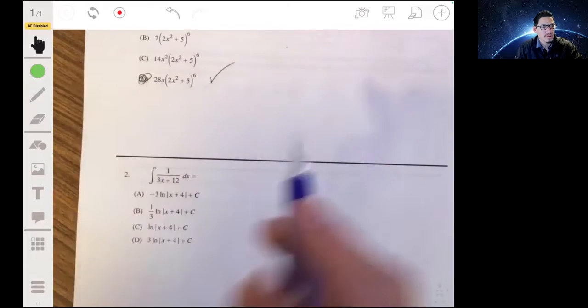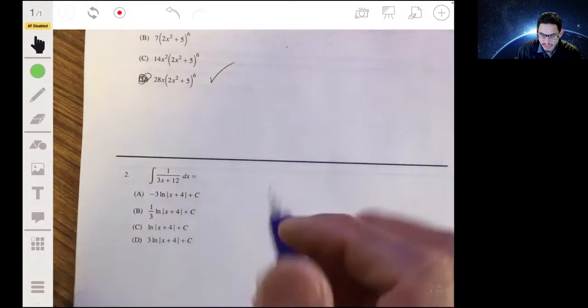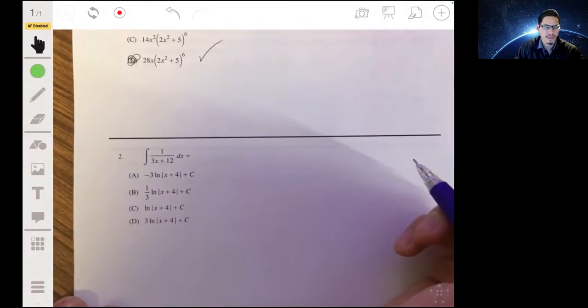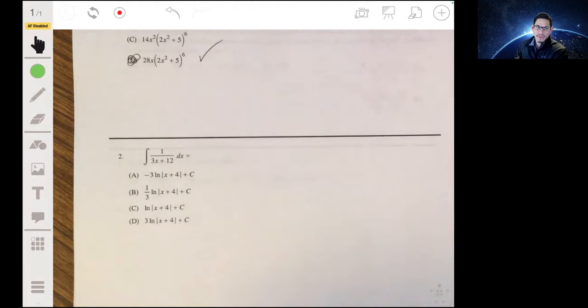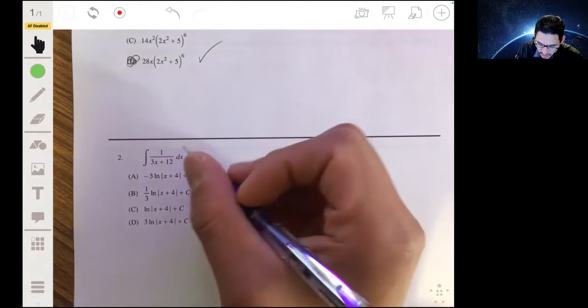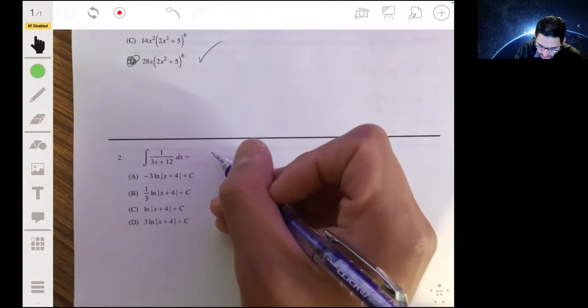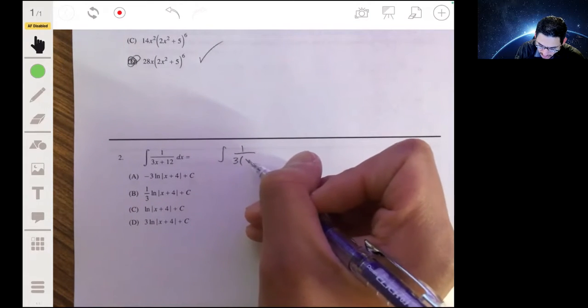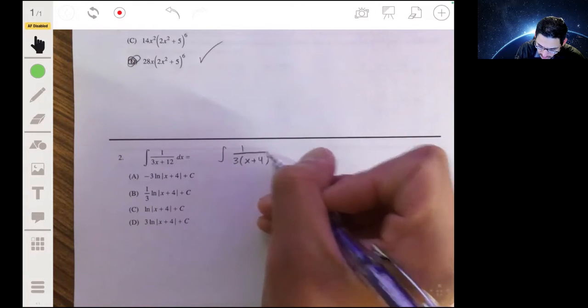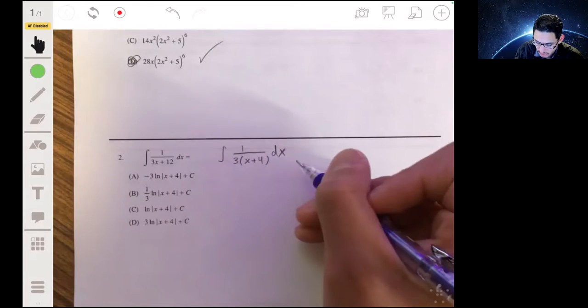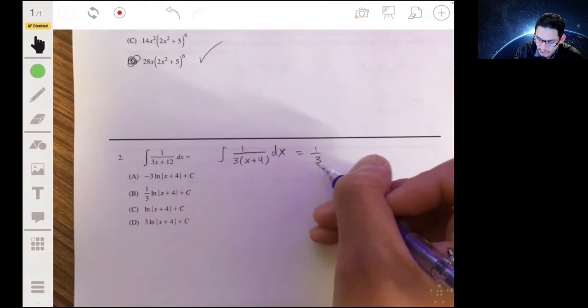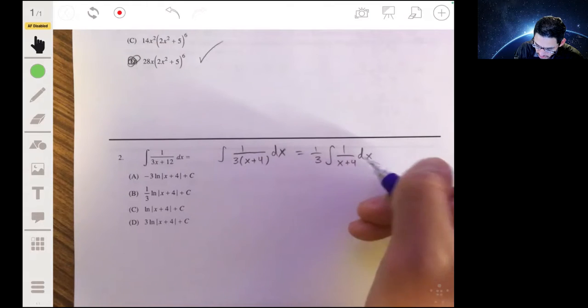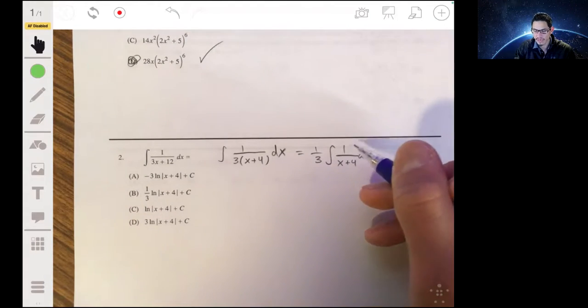Alright, problem two. This is something where you can use the natural log rule or the u substitution technique. But once you start really getting good and familiar with logarithms, you can kind of see the pattern. You can factor out one third. So what happens is you can actually take out a three from the denominator. So that'll be like x plus four times dx. And you can factor out a one third out of the whole integral.